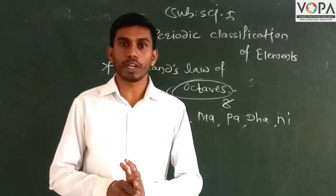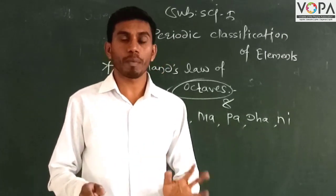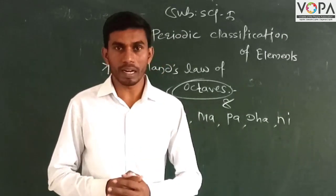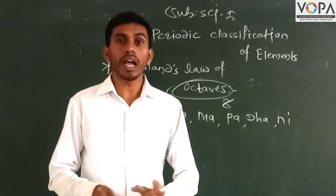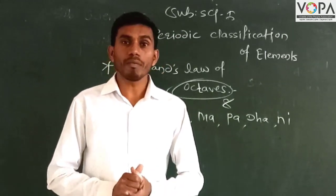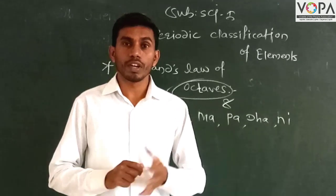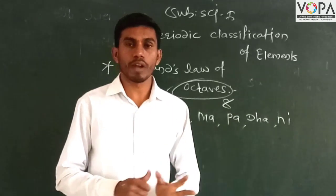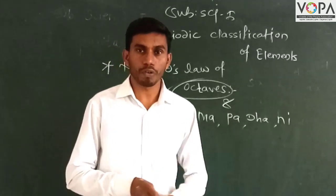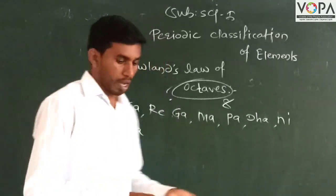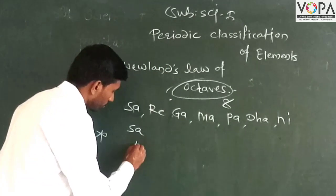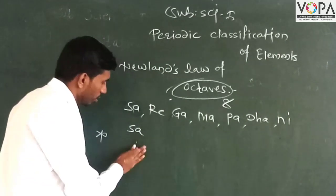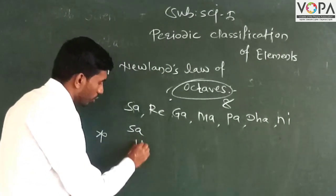In 1866, he found that every eighth element has a similar property to those of the first. These elements are called octaves — the second element of the group.